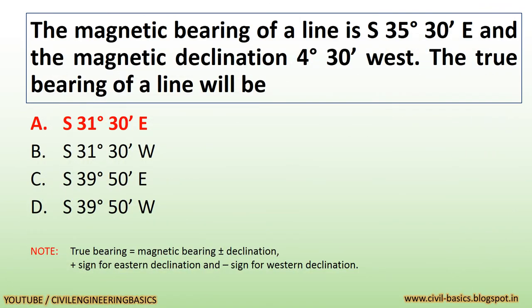The magnetic bearing of a line is S 35°30' E and the magnetic declination is 4°30' W. The true bearing of the line will be S 31°30' E. Note: true bearing equals magnetic bearing plus or minus declination — plus sign for eastern declination and minus sign for western declination.